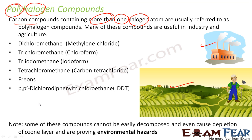Please note that some of these compounds cannot be decomposed easily, and thus they cause ozone layer depletion. We know the harmful effects of ozone layer depletion — UV rays easily pass through and cause a lot of disease to human beings, as we learned in the environmental chapter in class 11.